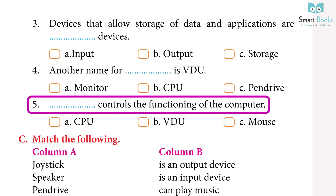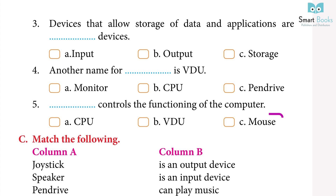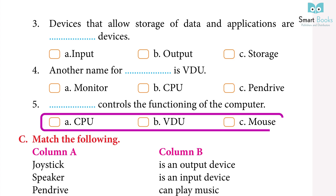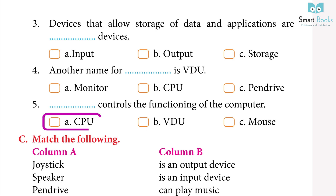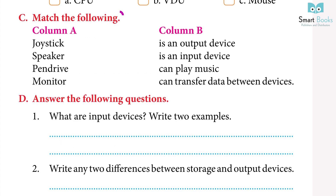Question 5: dash controls the functioning of the computer. A. CPU, B. VDU, C. Mouse. Answer: A. CPU.